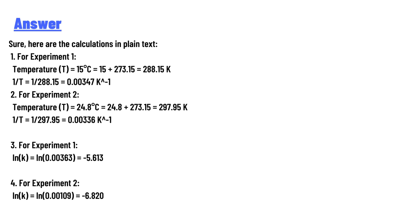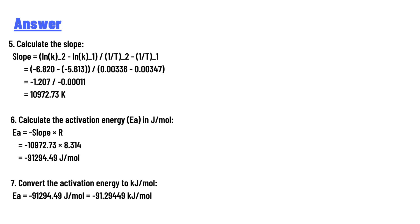For experiment 1: ln(k) = ln(0.00363) = −5.613. For experiment 2: ln(k) = ln(0.00109) = −6.820.